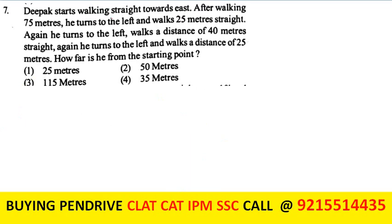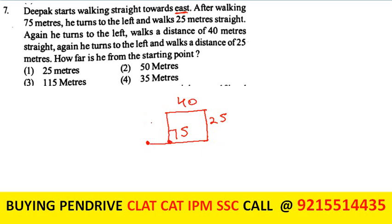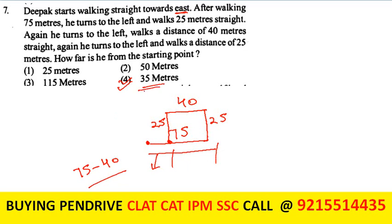Deepak starts walking east. After 75 m, he turns left and walks 25 m north. He turns left again and walks 40 m west. The question is how far he is from the starting point. The east distance is 75 minus 40 = 35 m. His distance from the starting point is 35 m. The fourth option is the answer.